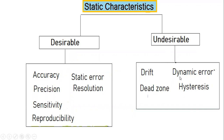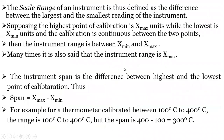The scale range is defined as the difference between the largest and the smallest reading of the instrument. If the highest point of calibration is x-maximum and the lowest is x-minimum, the range is expressed as x-minimum to x-maximum. If x-minimum is zero, the instrument range is expressed as its maximum value.